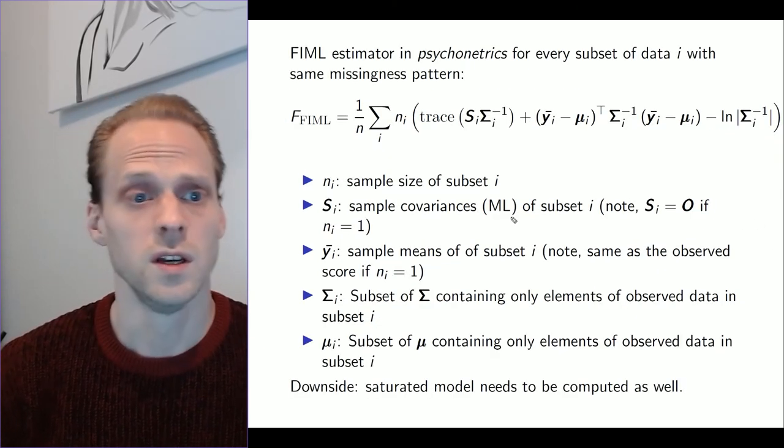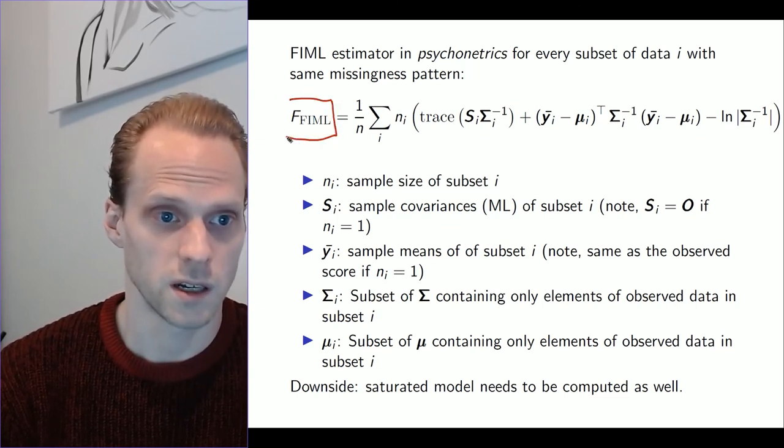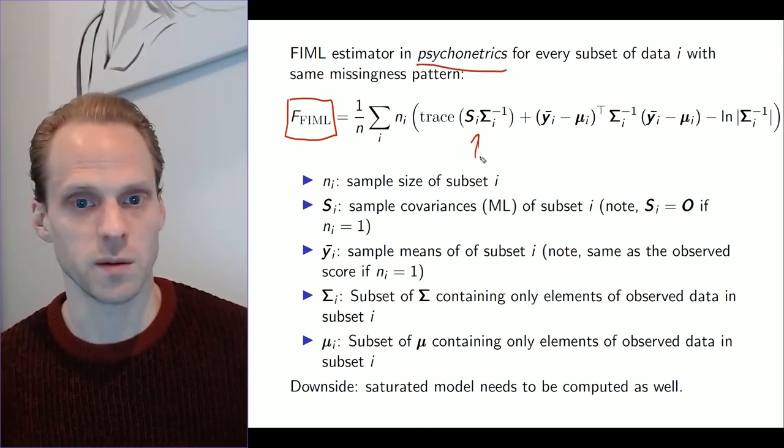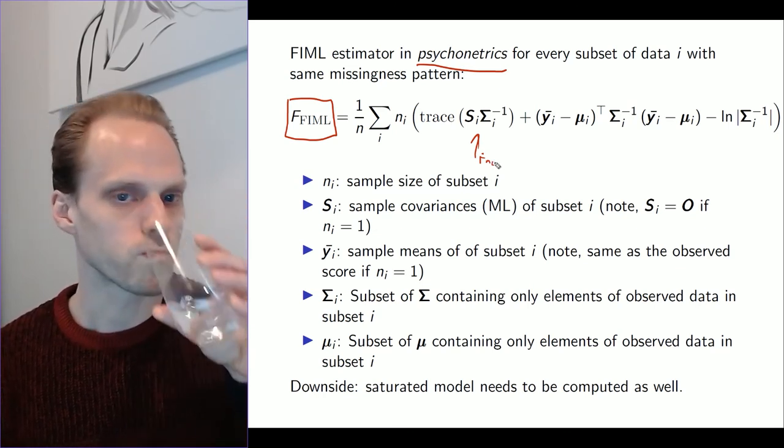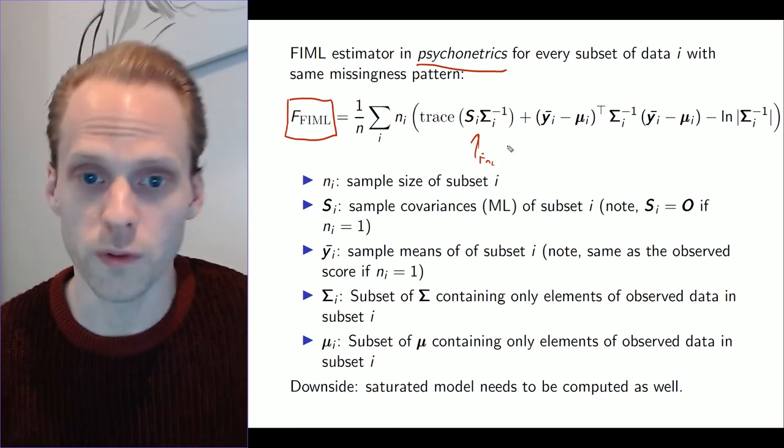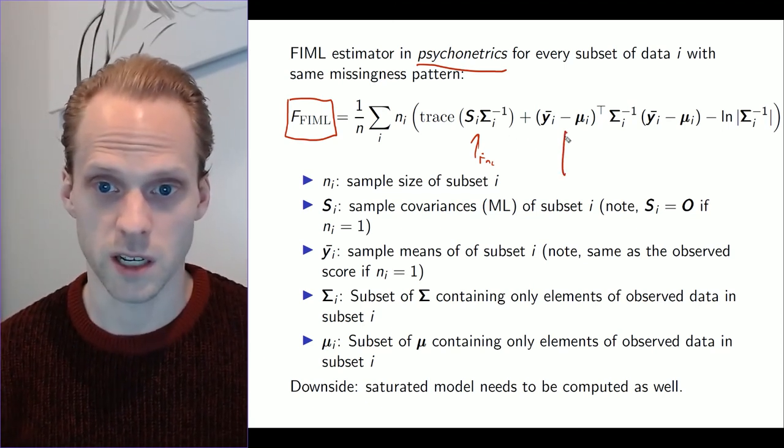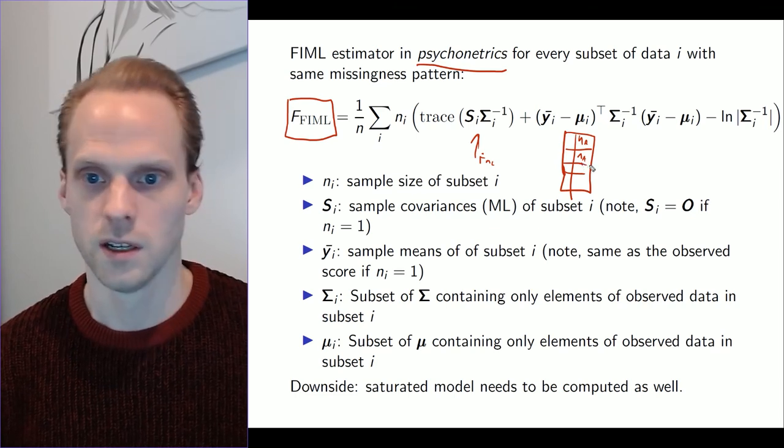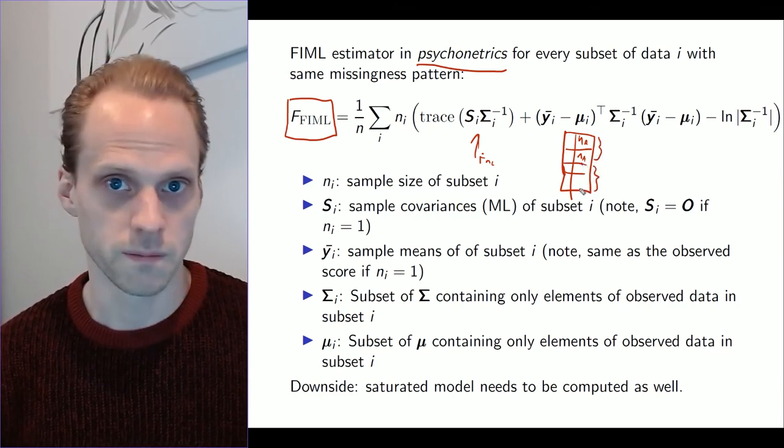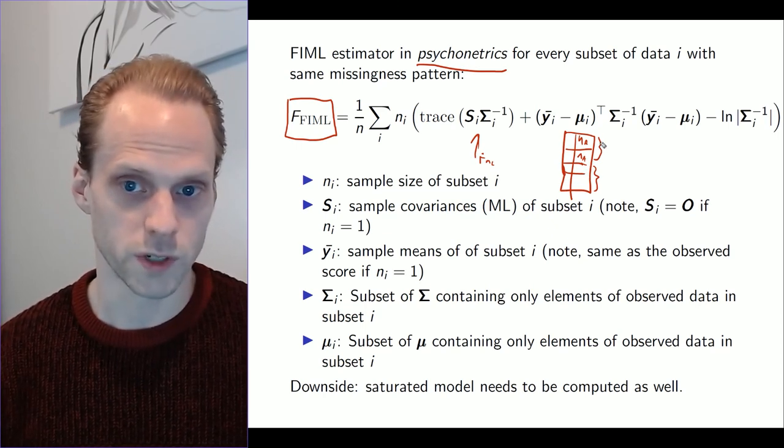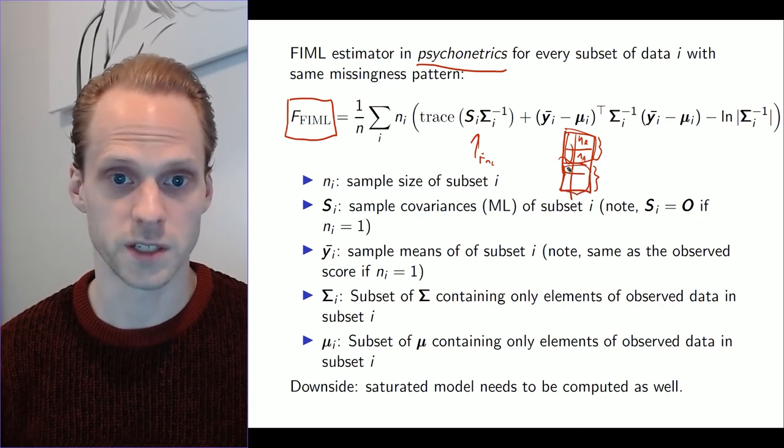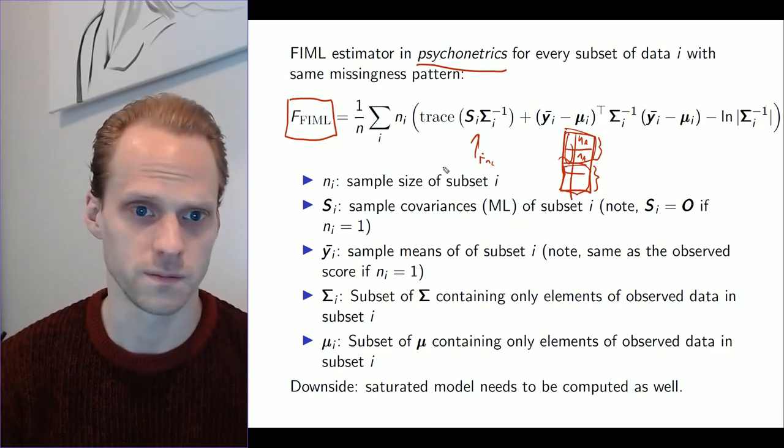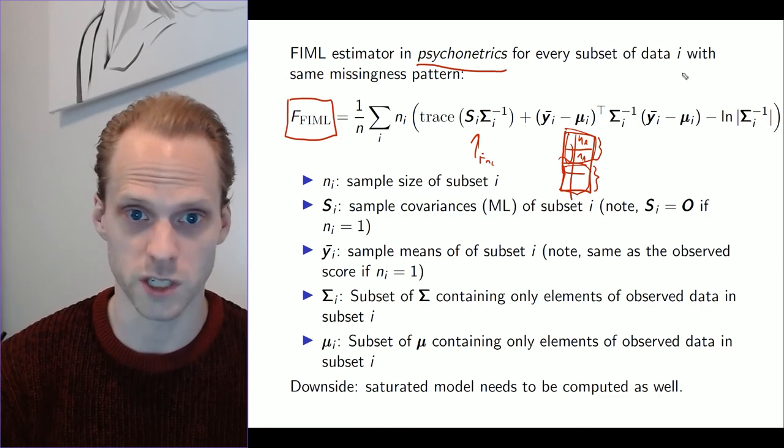To give some very technical detail behind this, this is what the fit function looks like for FIML. This is one way, this is the way I do in Psychonetrics. What I actually do, this is actually the same as I said before, the FIML function. But what I do is I compute this per group of data that has the same missingness pattern. Let's say I have a data set, and these two have the same pattern and these two have the same pattern. I just simply compute this function once for this group with only these observations, and once for this group with all observations. Then you add the result and you get your fit function. Another way to do it would be to really go over every possible case or do this per case.